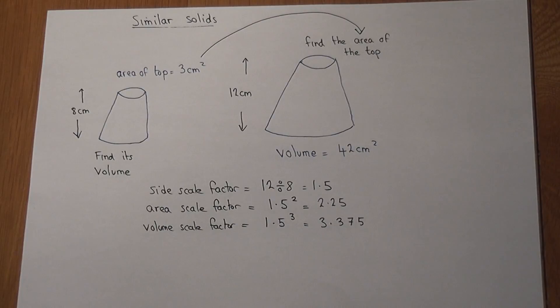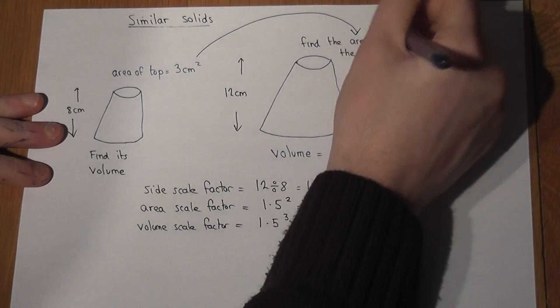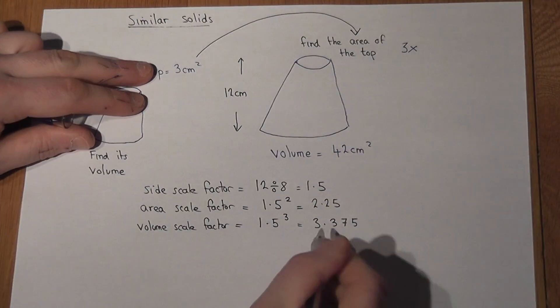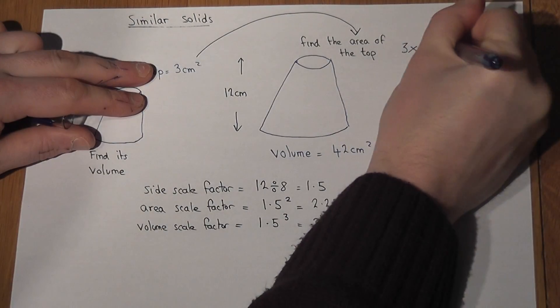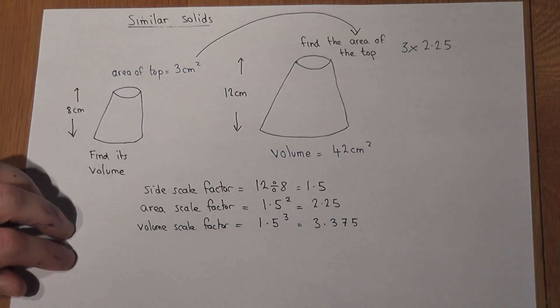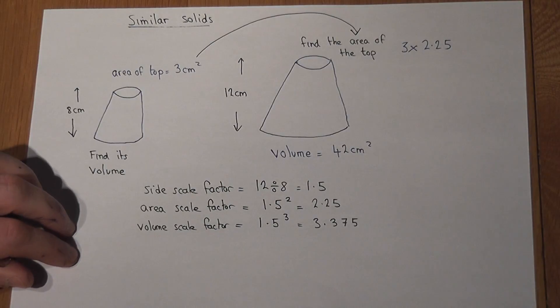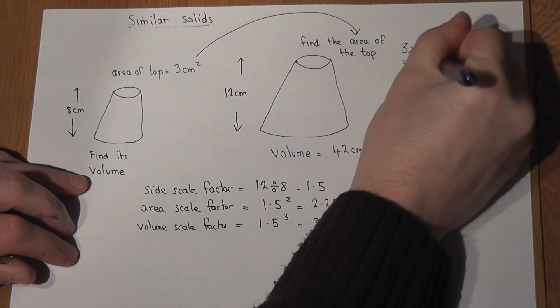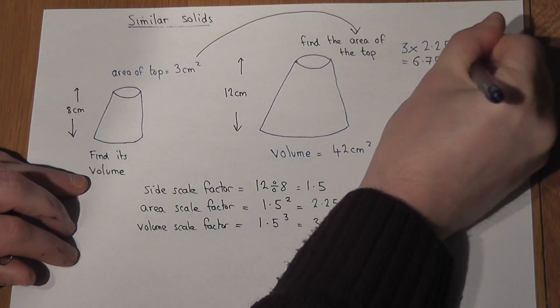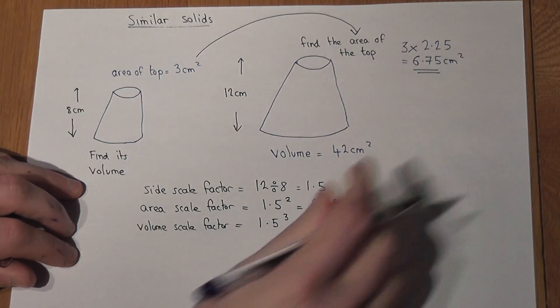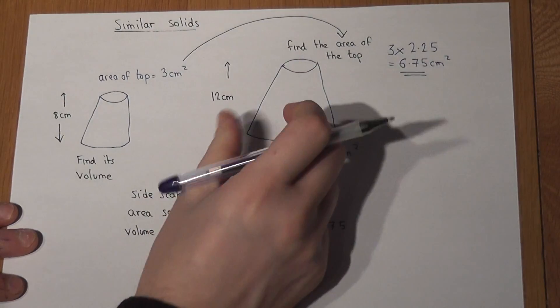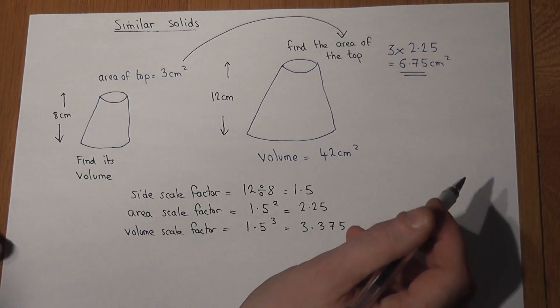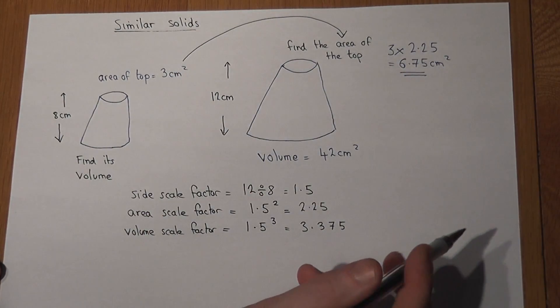If I do 3 times the area scale factor, so 3 lots of 2.25, gives me 6.75 centimeters squared. So the area of the top of the larger shape is 6.75 centimeter squared.